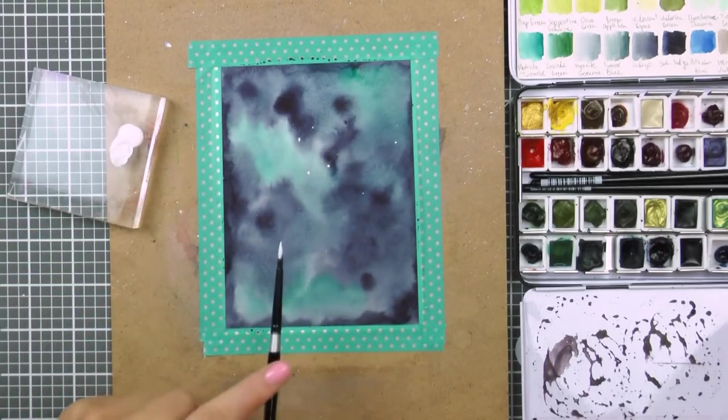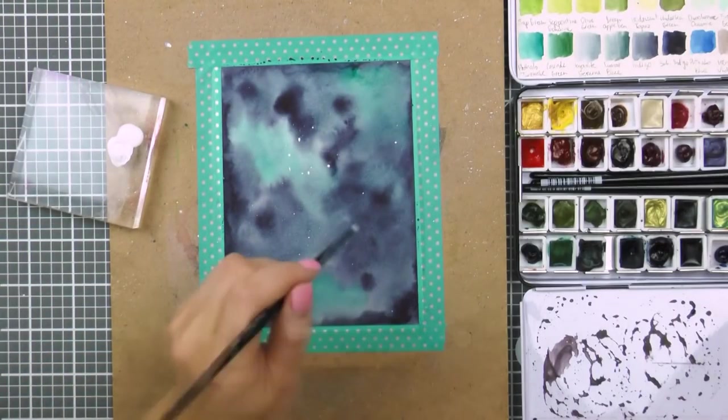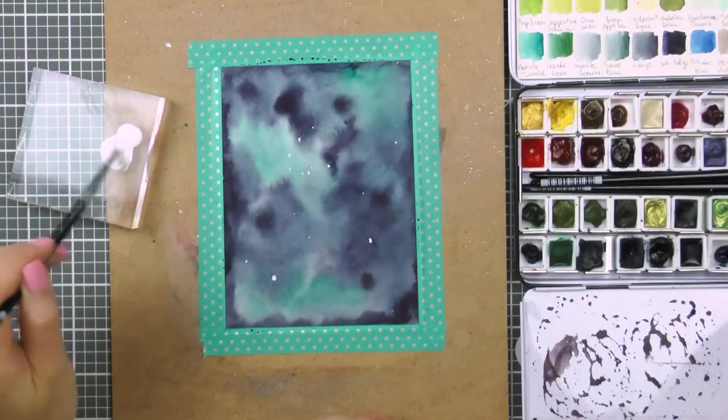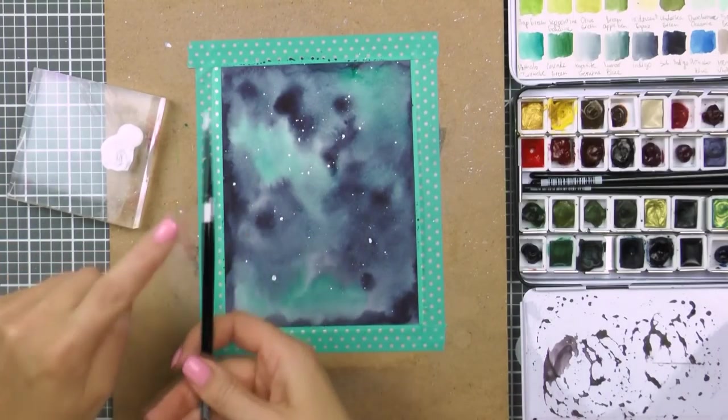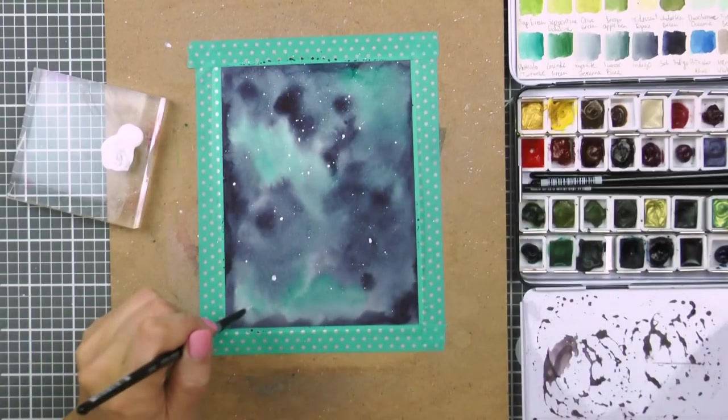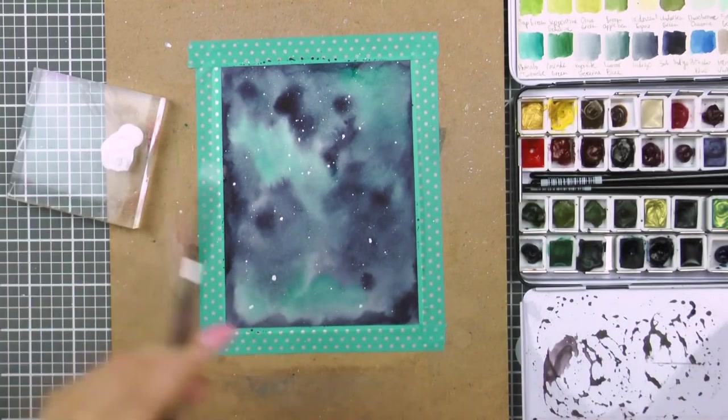Now to add white which will mimic stars, I'm going to use white acrylic paint. I've added a little bit onto the clear block and going to use a smaller round brush number 4 to pick up some of that paint. My brush is wet and I will add it onto my galaxy. I'm just tapping on the brush with my finger to create a little splatter.